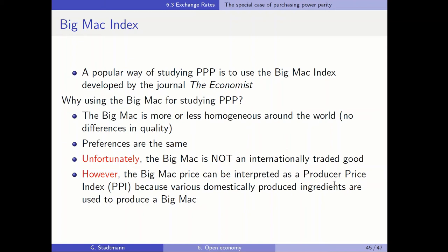Furthermore, the Big Mac price can be interpreted as a producer price index, because various domestically produced ingredients are used to produce a Big Mac. You need the ingredient labor — people creating, selling, and cleaning — you need the restaurant, so the price of land or rent for the location influences the Big Mac price. These factor costs also produce other tradable goods. Therefore, we regard the Big Mac price as a kind of producer price index.